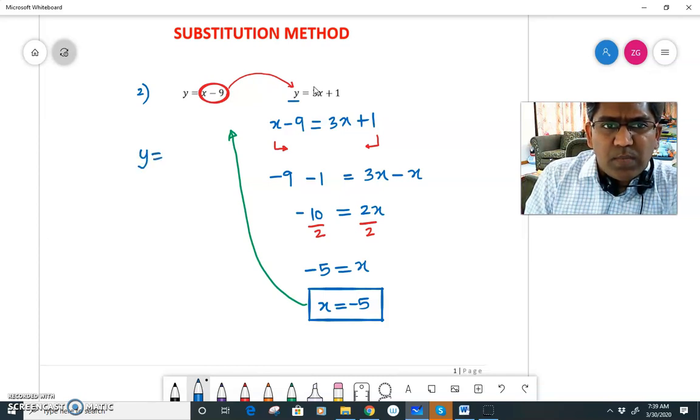So what do we get here? So y equal to, in place of x I'll write minus 5, so minus 5 minus 9. So my answer for y is y equal to minus 14.